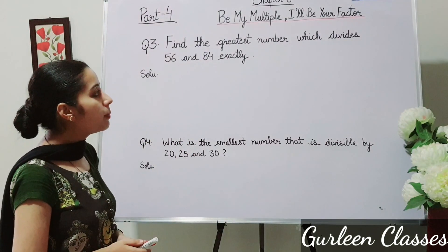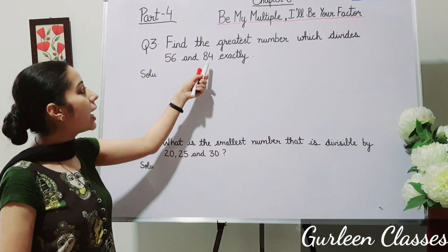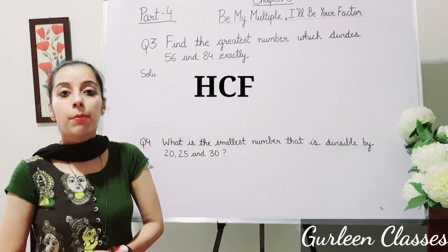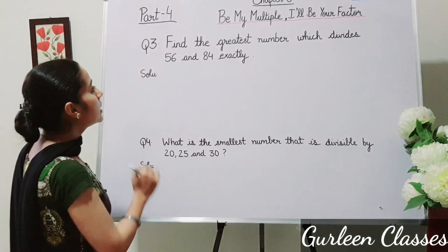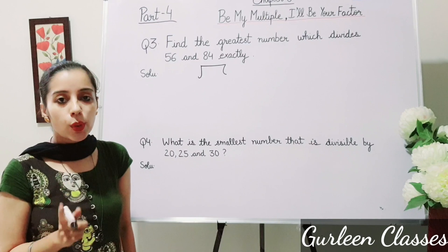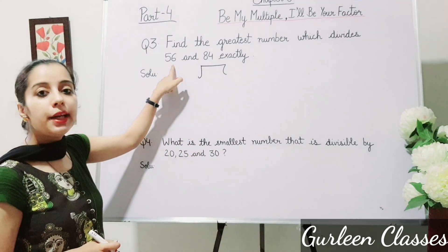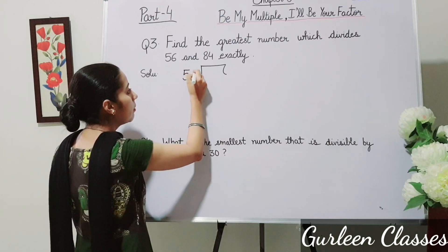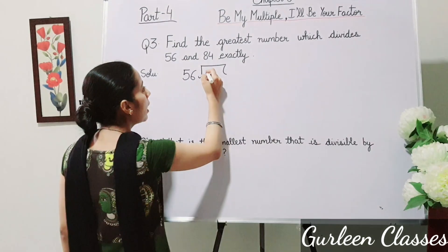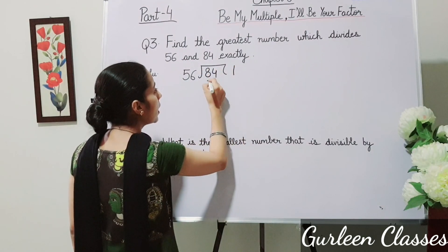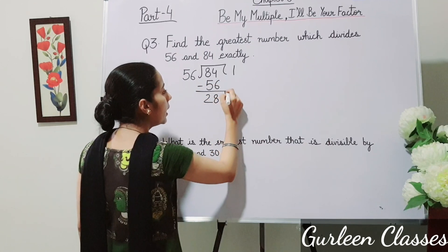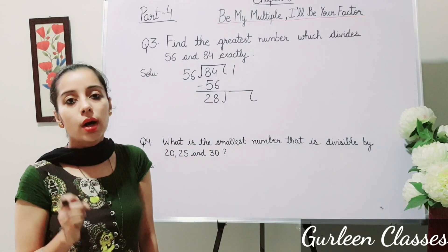Question number 3: Find the greatest number which divides 56 and 84 exactly. To find the greatest number, we have to find HCF by the division method. So let us divide 56 and 84. The smaller number, 56, will be the divisor and the higher number, 84, will be the dividend. 56 once is 56; subtracting gives remainder 28.